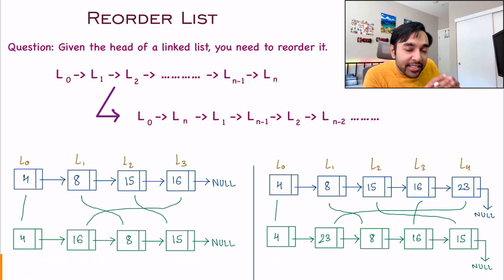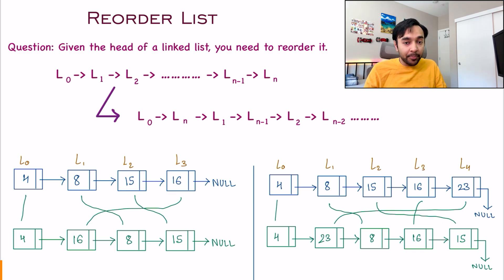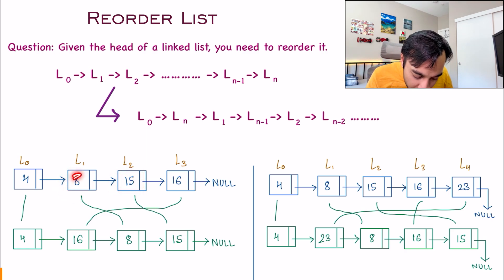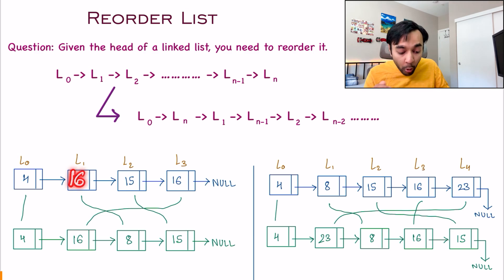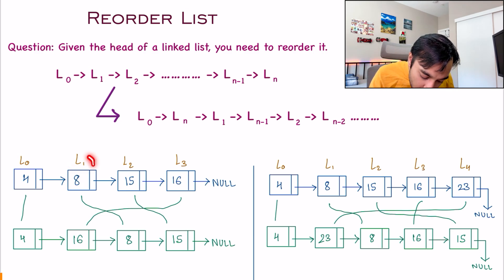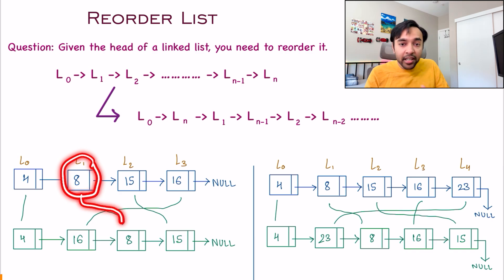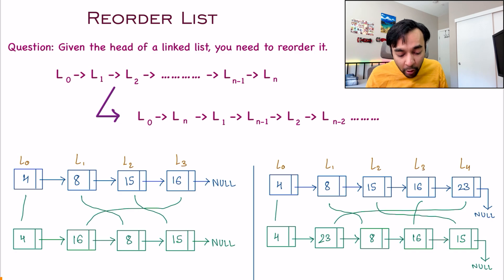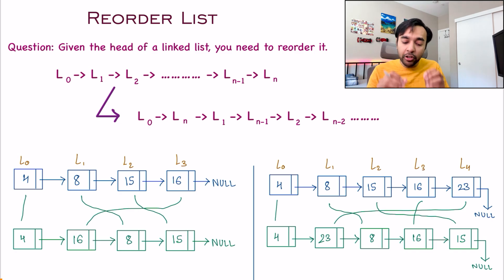Since this is a linked list, you are expected to just change the pointers. It means you cannot change the value of any of these nodes. You cannot say that you will remove 8 from here and write a 16 in this node. You have to actually move all of these nodes to their new places — that is how you have to perform the reordering. If you feel you've understood the problem statement, feel free to try it out; otherwise, let us dive into the solution.